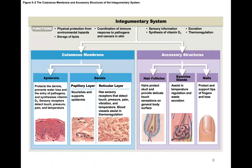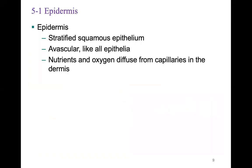Here is a process map showing the main divisions of the integumentary system: the epidermis, the dermis, and the accessory structures. Looking at the epidermis, this is stratified squamous epithelium. Stratified means multiple layers; squamous means flattened cells. So this is multiple layers of flattened cells — an epithelial tissue.